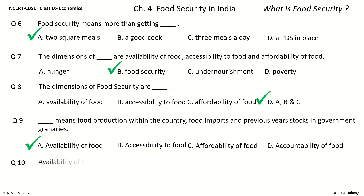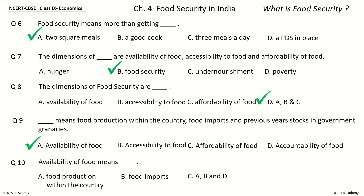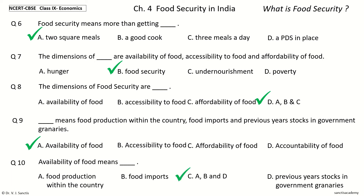Question 10: Availability of food means dash. The options are: A) food production within the country, B) food imports, C) imports and products, D) previous year stocks in government granaries. Your time to choose. And the answer is A, B and D. So availability of food means food production within the country, food imports, and previous year stocks in government granaries.